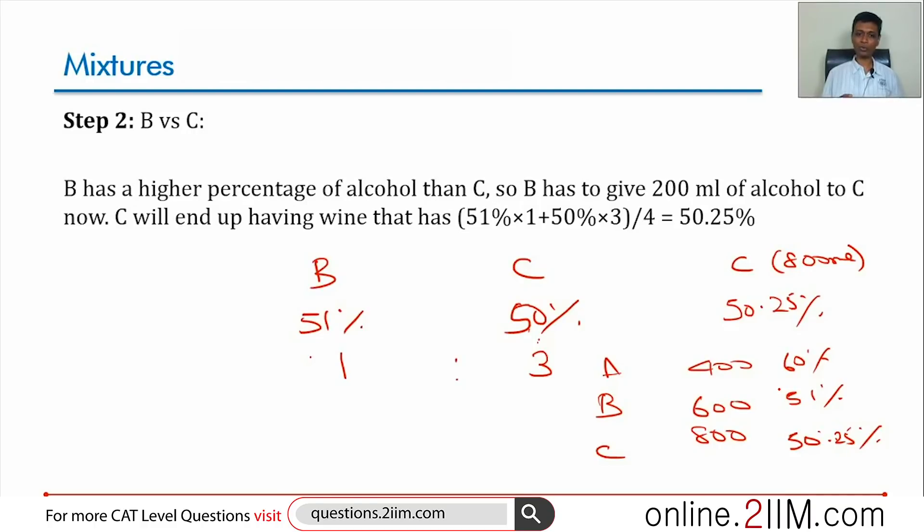created. Never will a mixture get created that has more than 60%. So anytime A plays again, A will keep giving away. A will get completed and then B and C keep playing. One person will have higher percentage than the second one. He will transfer, then the new mixture will get created.